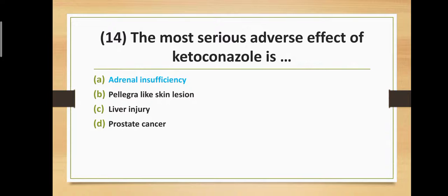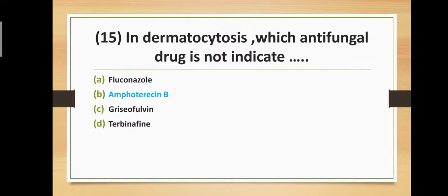Question number fourteen: What is the most serious adverse effect of ketoconazole? Option A: adrenal insufficiency, Option B: pellagra-like skin lesion, Option C: liver injury, Option D: prostate cancer. The correct answer is Option A — the most serious adverse effect of ketoconazole is adrenal insufficiency.